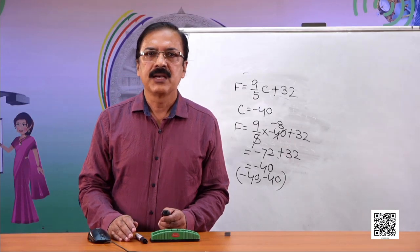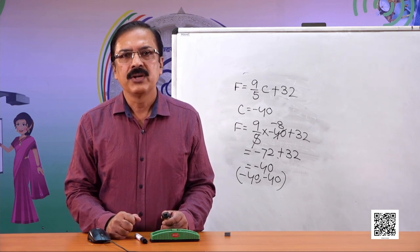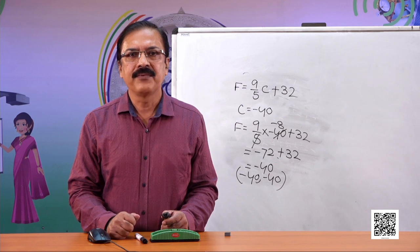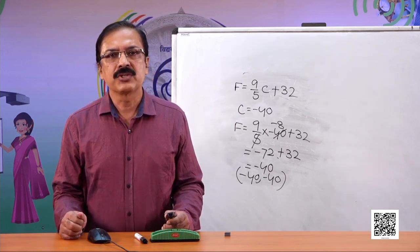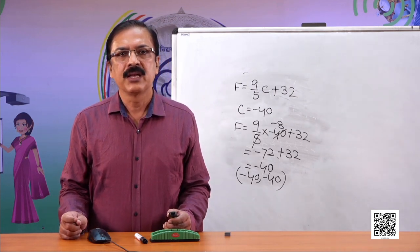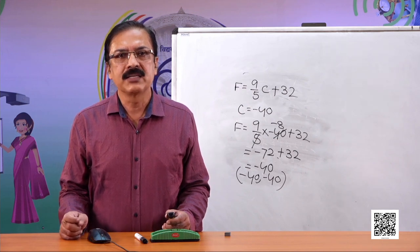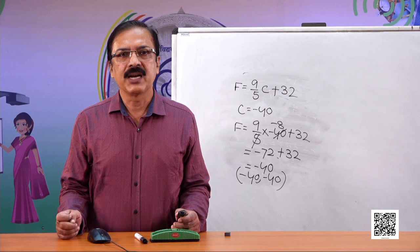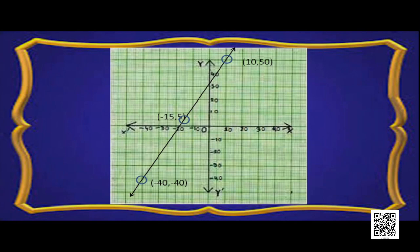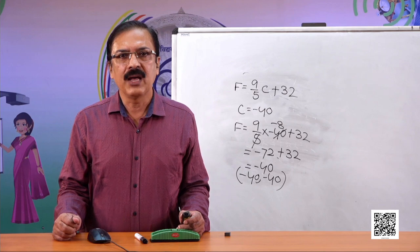In this session, we learned how to represent a linear equation on a graph. We find some solutions to the equation, plot those points on graph paper, and join them. Since this is a linear equation, joining the points gives a straight line. Such equations of the form Ax plus By plus C equal to 0, where both A and B are not zero, are called linear equations. Thank you.